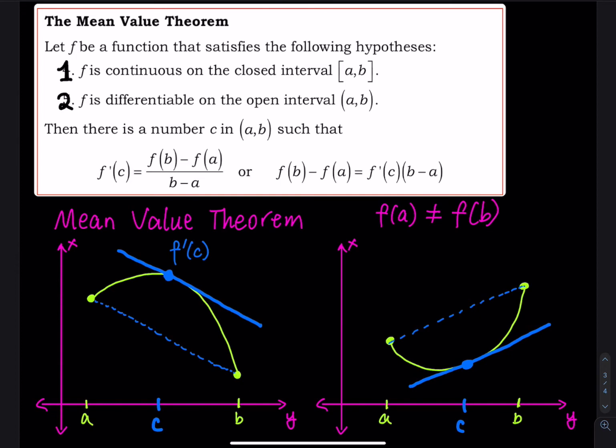I have three pictures to illustrate this. In the first picture, the curve goes up and then down, and I can find a point c such that the slope at c equals the slope of the blue dashed line. In the second picture, the curve goes down, and I can again find a point c between a and b where the slope of the tangent line equals the slope of the dashed line connecting a and b.